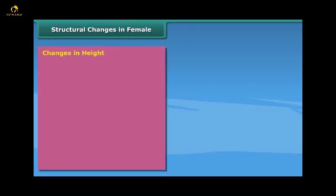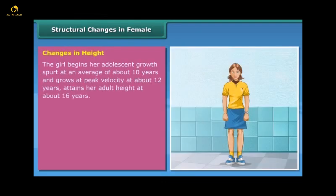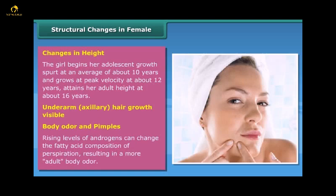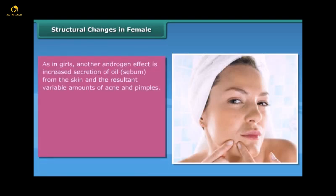Structural changes in females — changes in height: the girl begins her adolescent growth spurt at an average of about 10 years, grows at peak velocity at about 12 years, and attains her adult height at about 16 years. Underarm and axillary hair growth, visible body odor, and pimples: rising levels of androgens can change the fatty acid composition of perspiration, resulting in a more adult body odor.